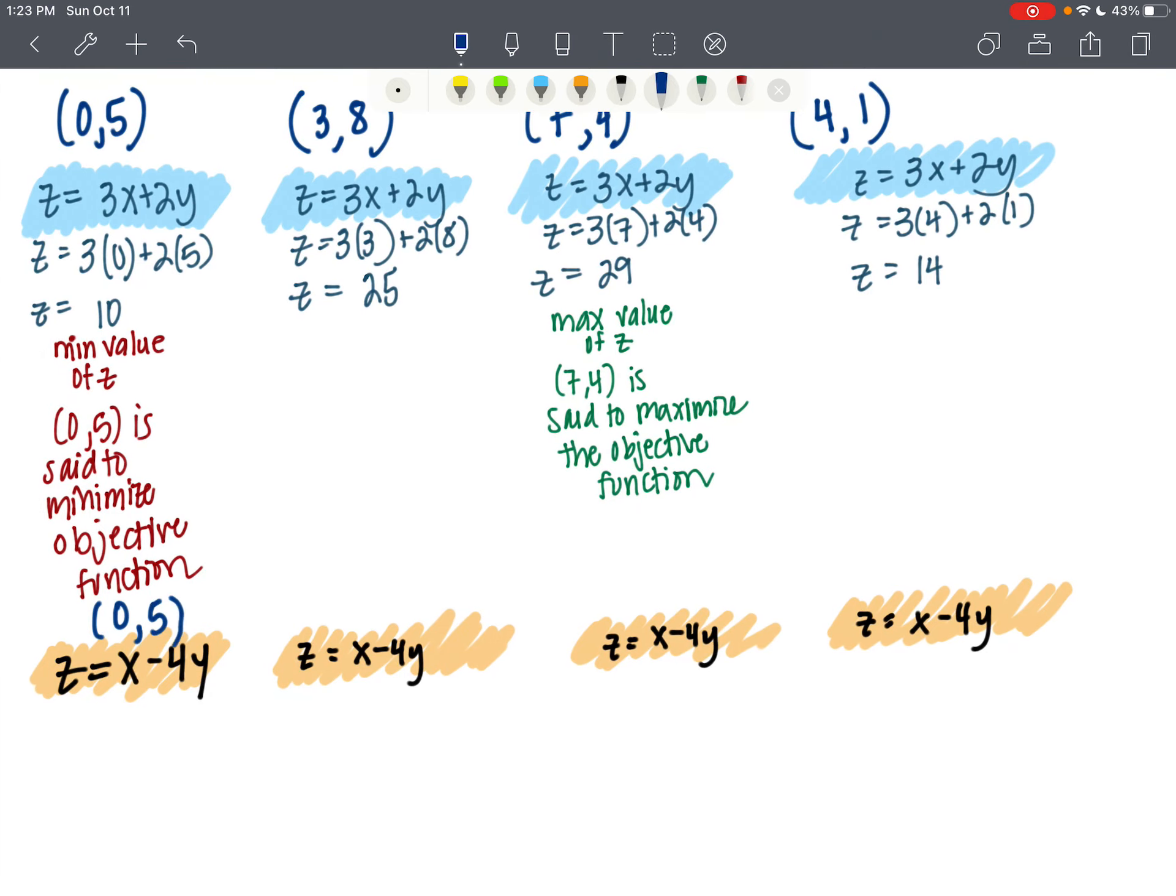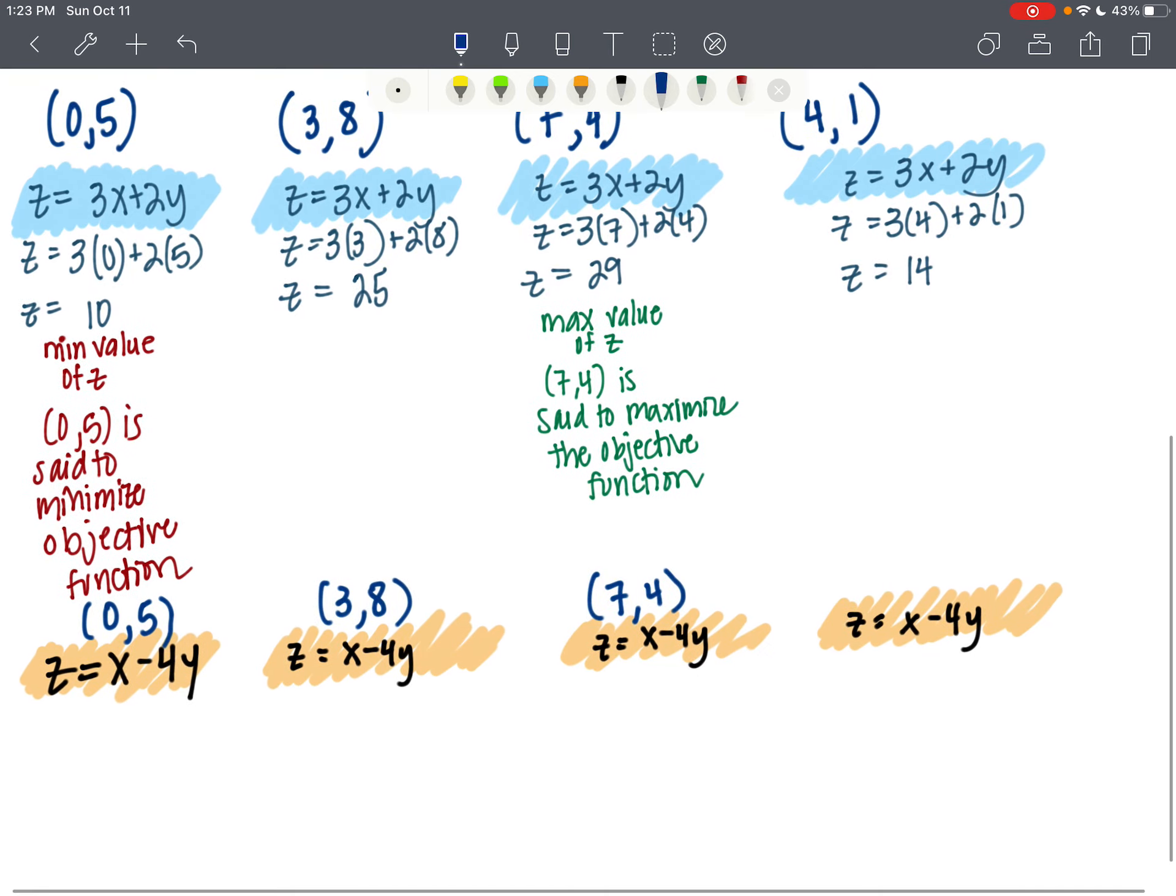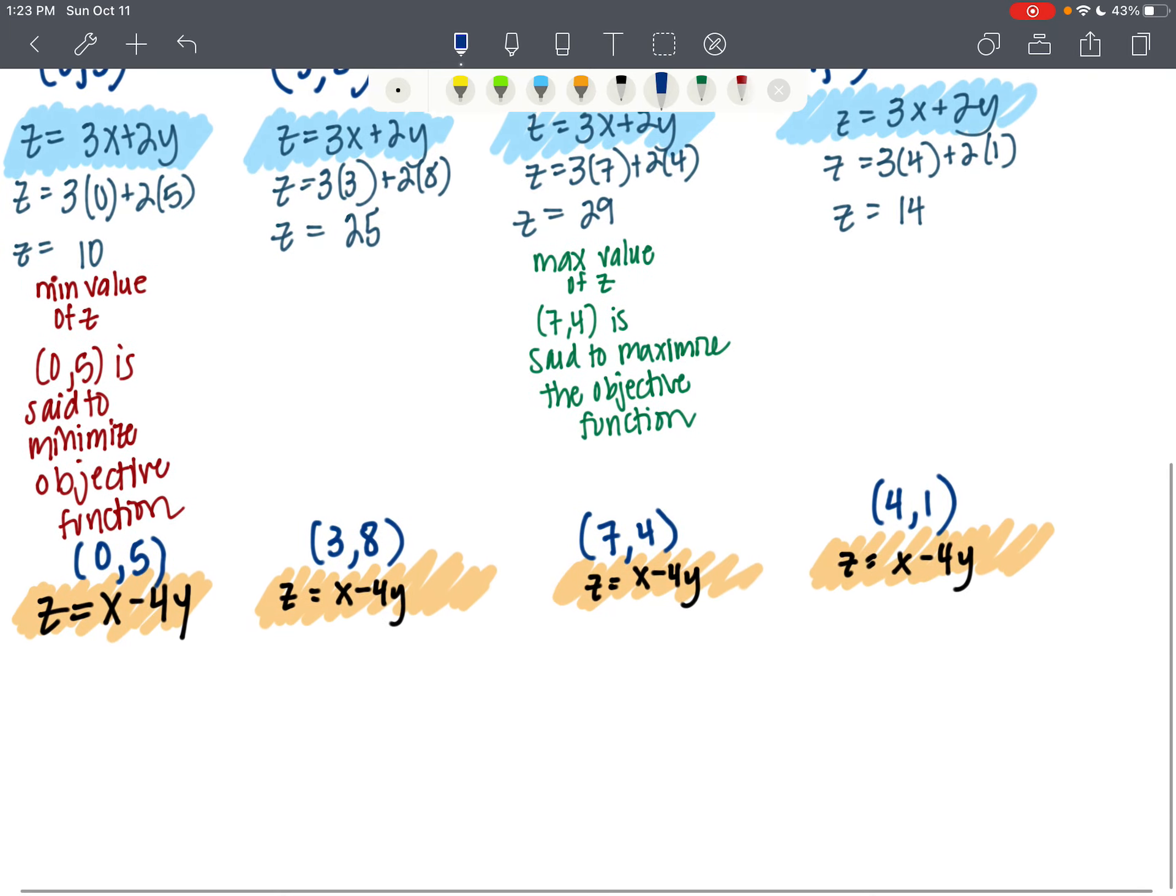0, 5, 3, 8, 7, 4, and 4, 1. And remember, those are the vertices of the feasible region. So go ahead and try and see which ordered pair maximizes and which one minimizes. And then when you're ready to reveal the answer, come on back and I will show you what I've gotten.